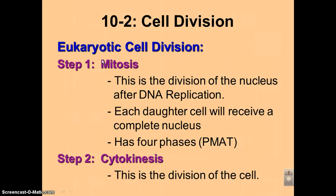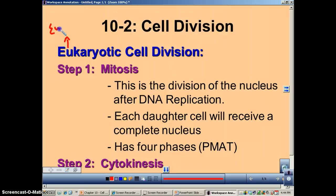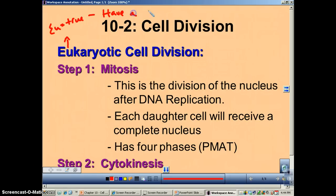It's that nucleus that separates eukaryotic cells apart. Now remember, 'eu' means true, and true cells have a nucleus. I just want to make sure we got that covered because you've got to remember that.